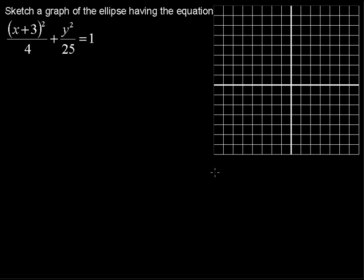Sketch a graph of the ellipse having the equation x plus 3 quantity squared over 4 plus y squared over 25 equals 1.